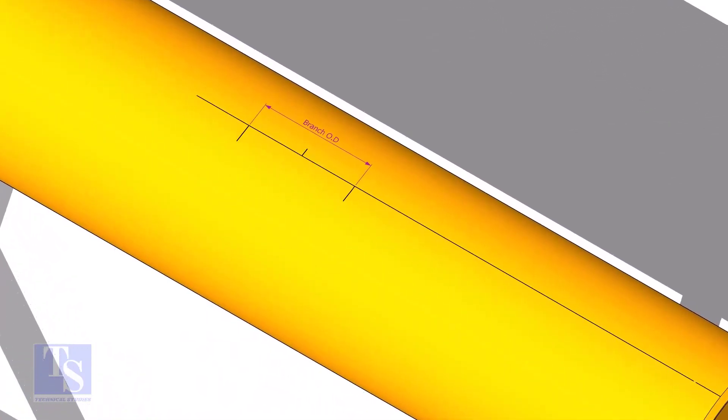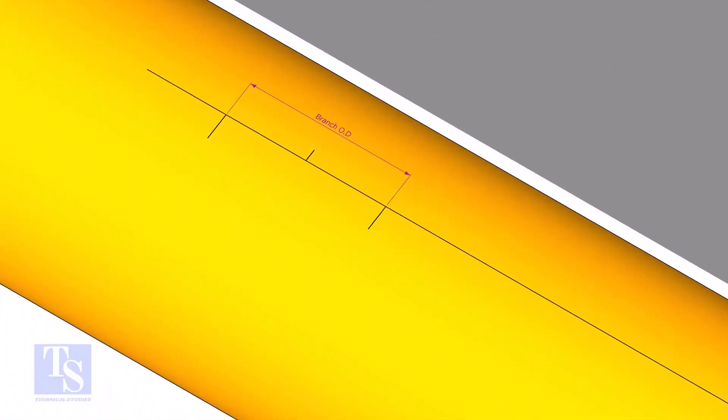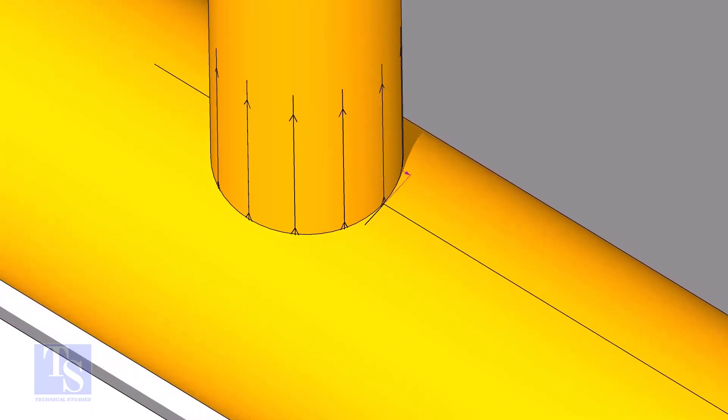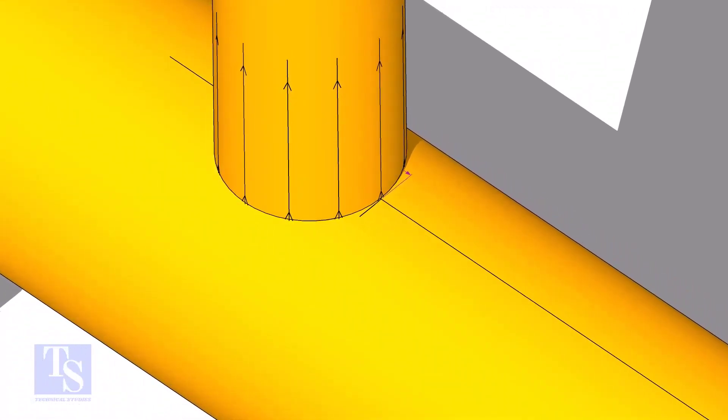Mark the branch OD on the center line of the header. Put the branch exactly on this marking, matching the branch center line.